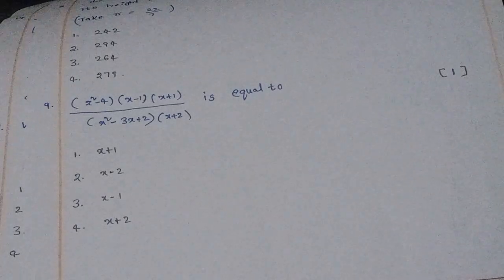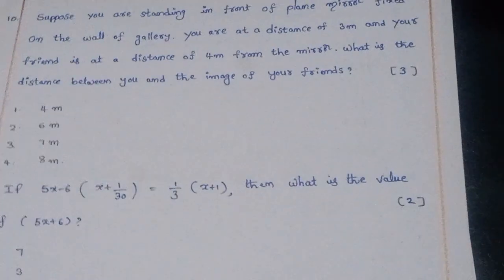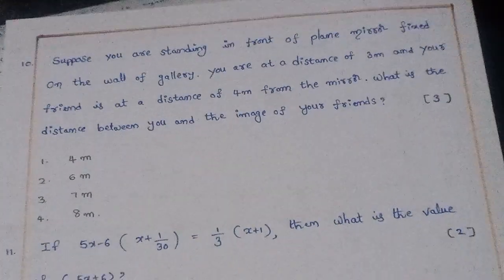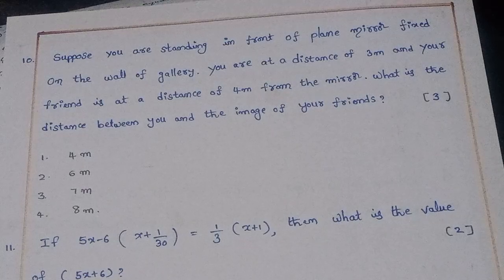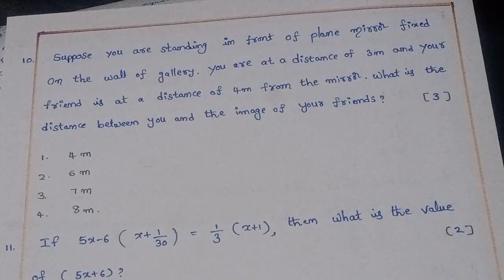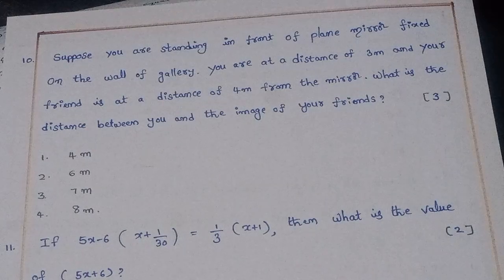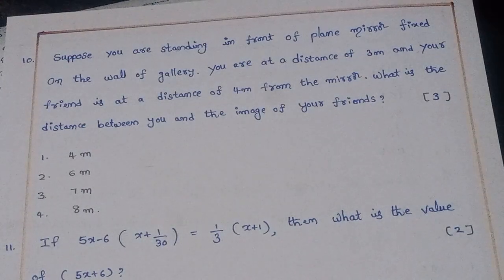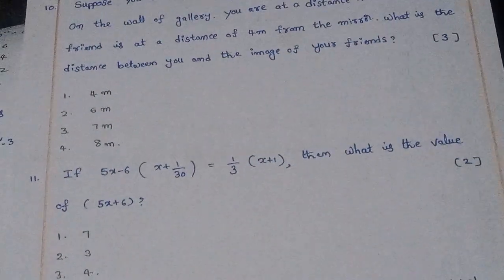Tenth question: Suppose you are standing in front of a plane mirror fixed on the wall of a gallery. You are at a distance of 3 meters and your friend is at a distance of 4 meters from the mirror. What is the distance between you and the image of your friend? The right answer is option 3: 7 meters.